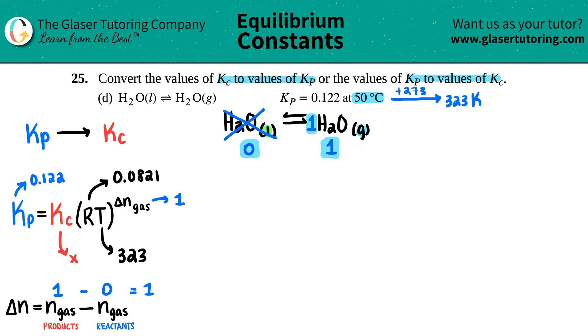Now we have everything. Let's plug it in and play. Kp was 0.122. This is going to equal Kc, which is what we're trying to solve for, X times 0.0821 times 323. Remember, these are both in parentheses. And then it's just going to be raised to the first. And remember, anything raised to the first is itself. So we don't even care about this. So 0.122 equals X times 0.0821 times 323. I get 26.5183.